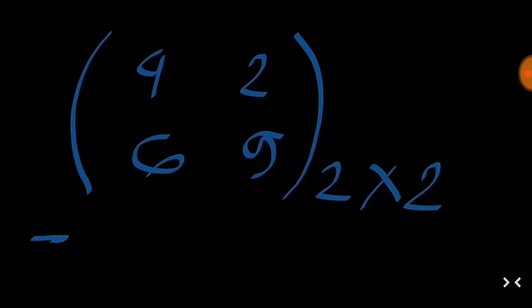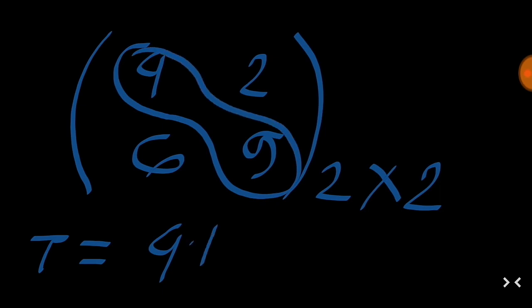This is obviously a square matrix. Then the trace is given by the diagonal elements 4 and 9. So 4 plus 9 is the trace. That is 13. So the trace is also 13.